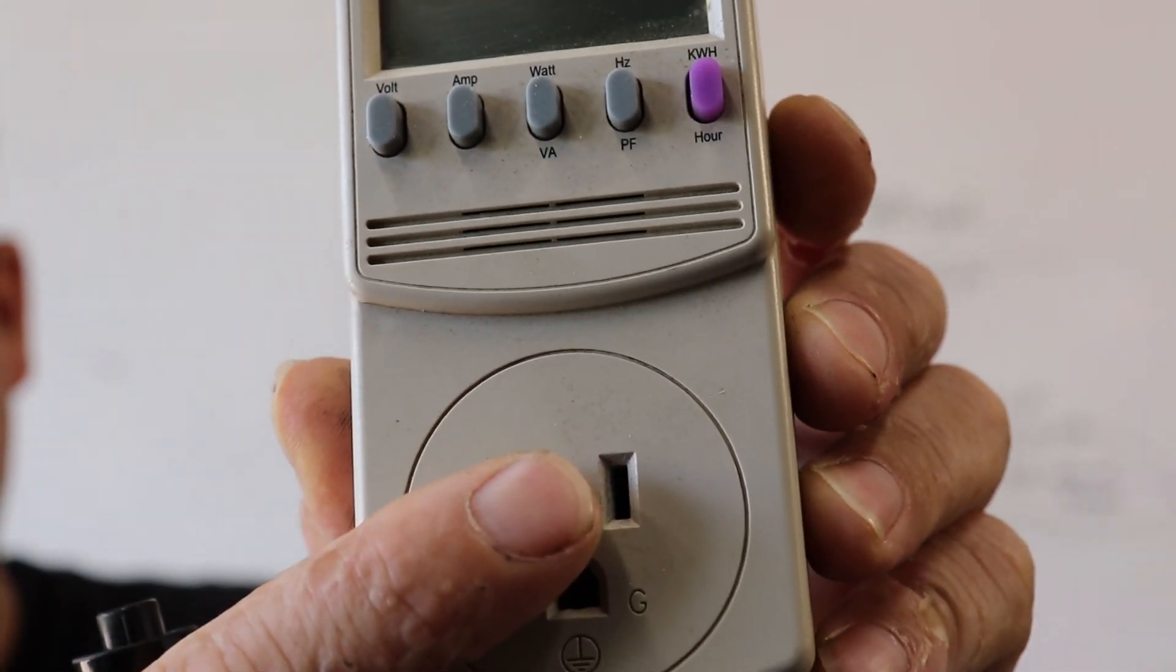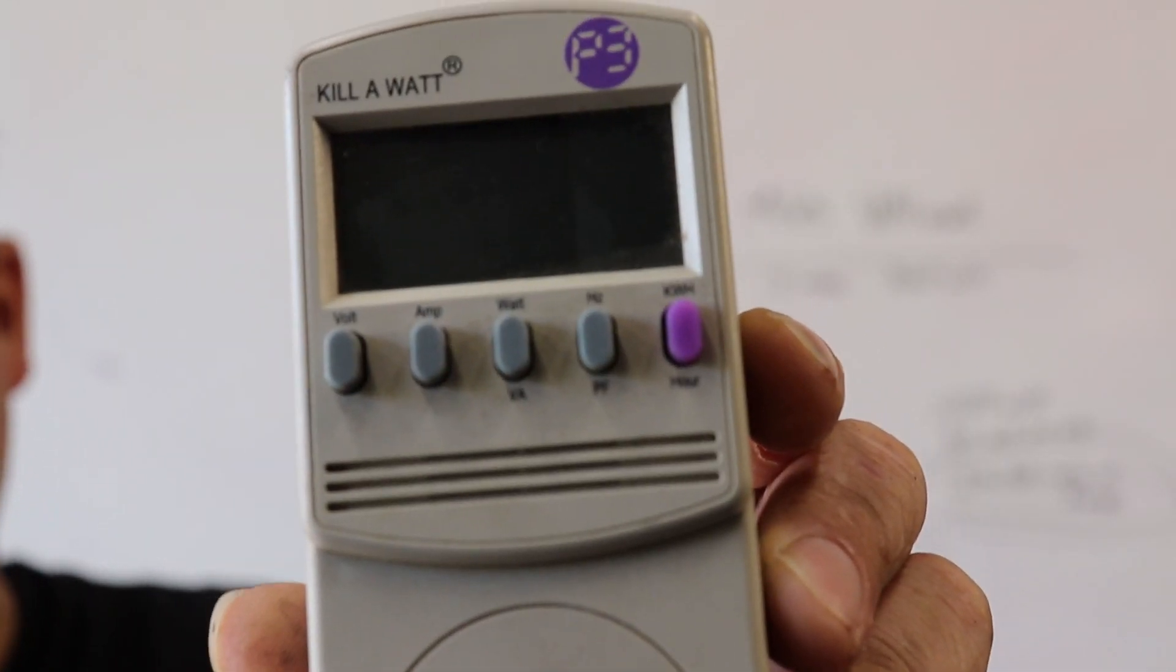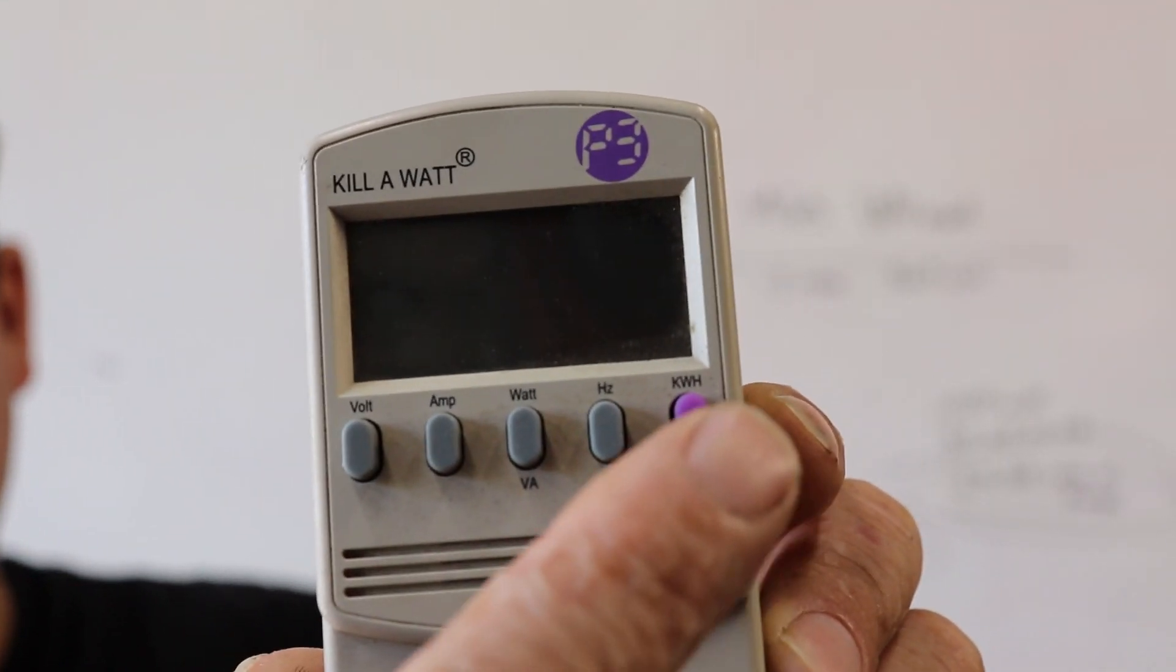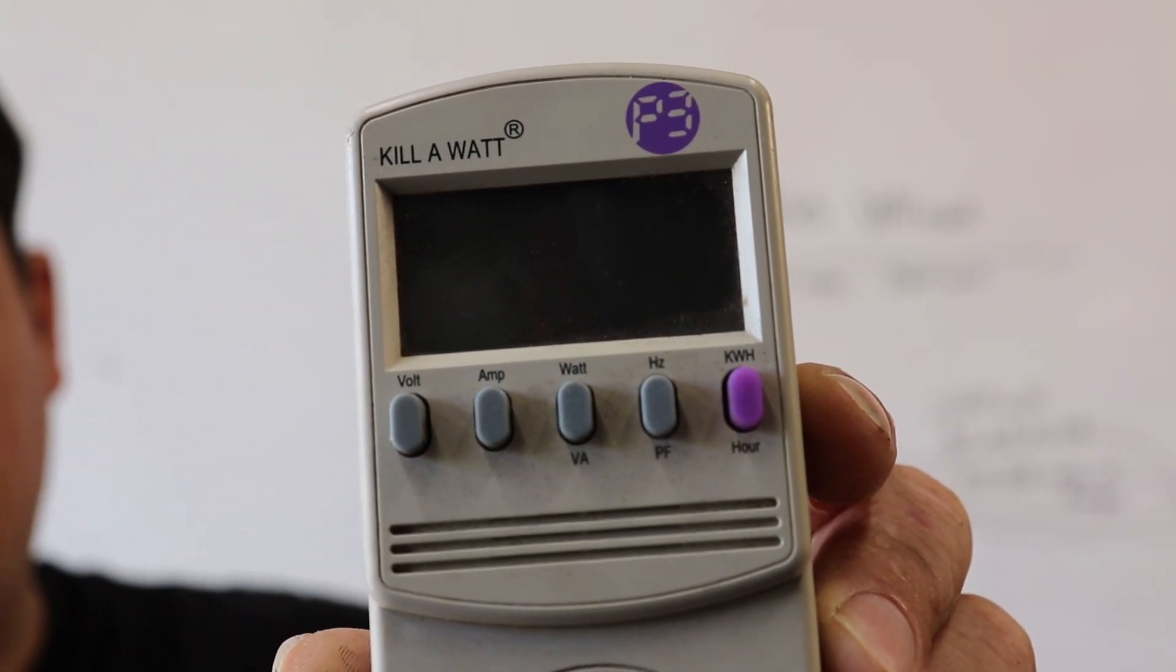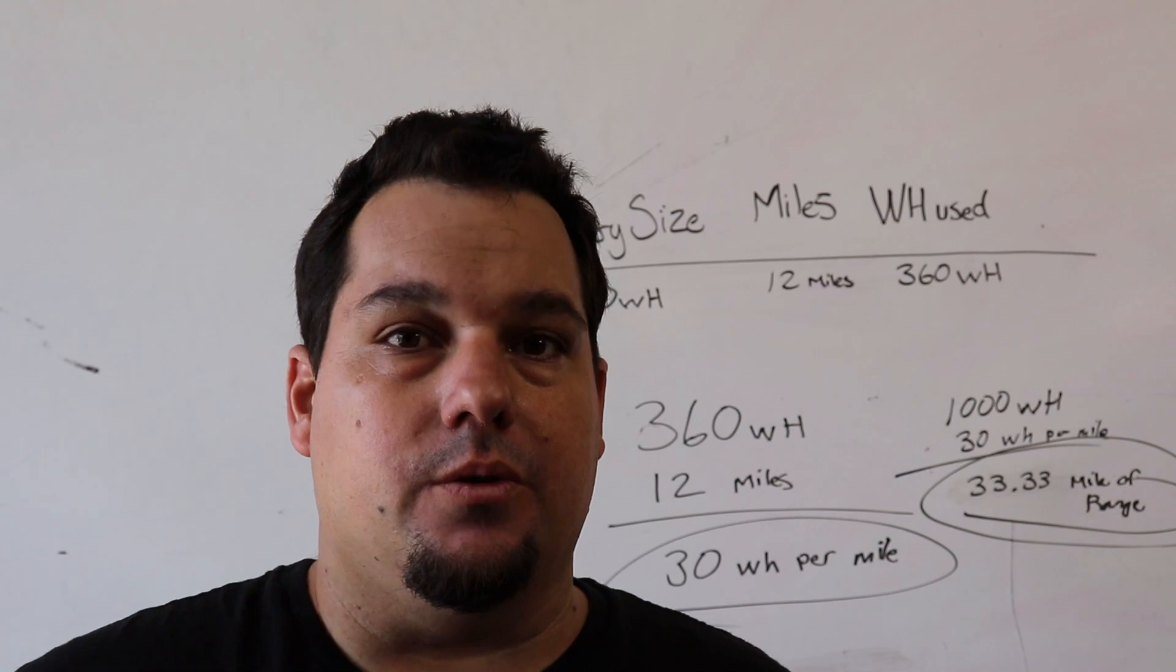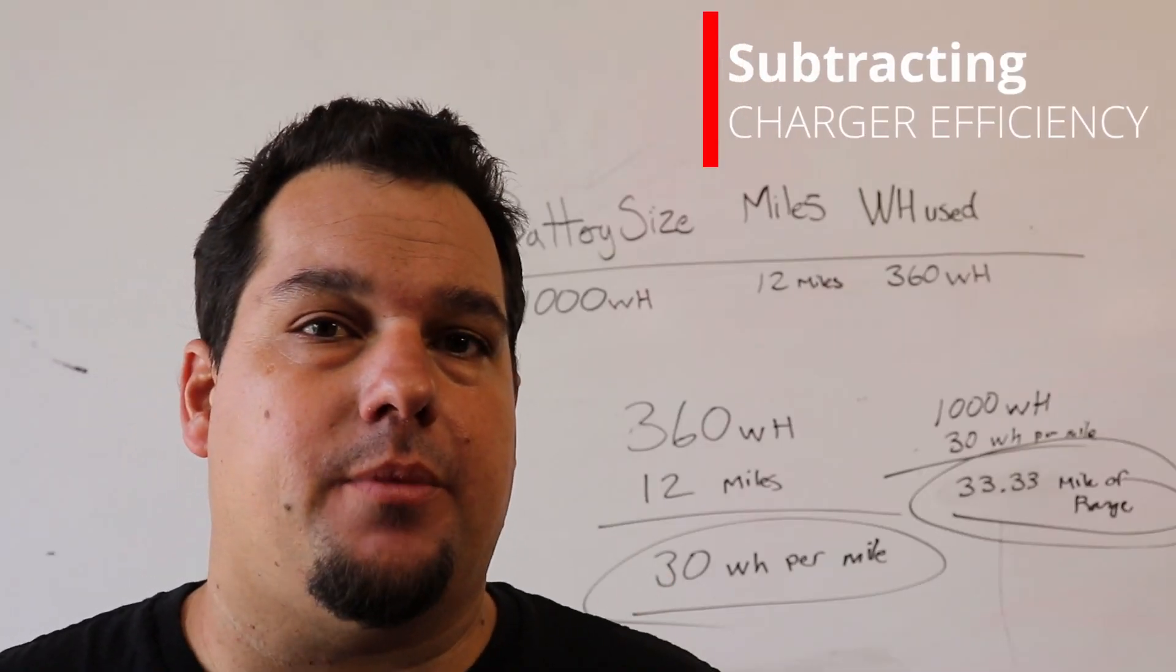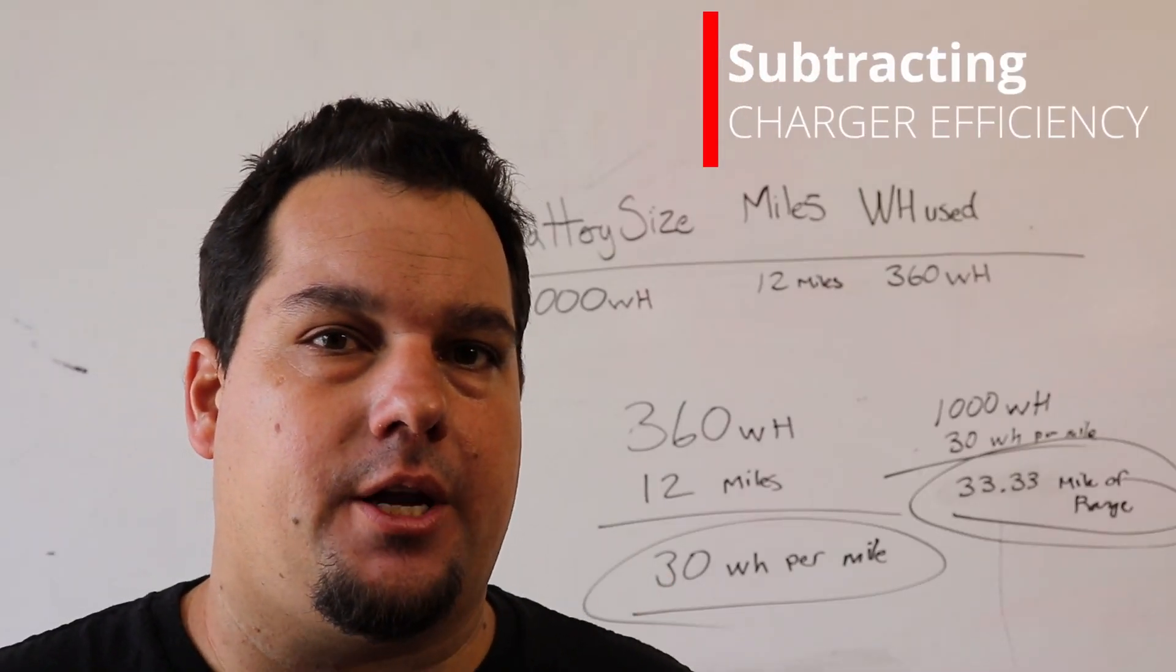And basically what you do is you plug in your charger right here, plug this kilowatt meter into the wall, and you'll click that button right there, and it'll move over to kilowatt hours used. So another thing to keep in mind is that all chargers are about 80, 85 to 90 percent efficient.